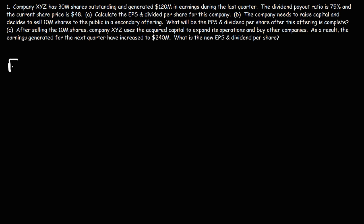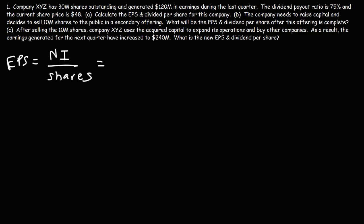So let's start with the EPS. The EPS, or earnings per share, is the net income or earnings divided by the number of shares outstanding. The company has a net income of $120 million, and the number of shares outstanding is 30 million. $120 million divided by $30 million is $4, so the company is earning $4 per share.